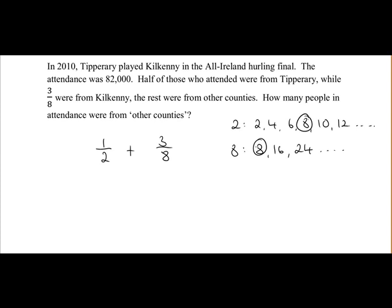So eight is going to be our common denominator. So we'll convert everything to eighths. One over two is what over eight? Two into eight goes four times, four ones are four. So one over two is the same as four over eight. Three over eight: eight into eight once, one times three is three. So we have four plus three over eight, and that's equal to seven-eighths.